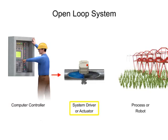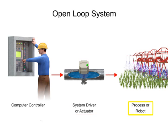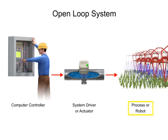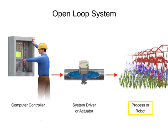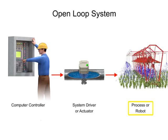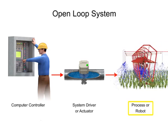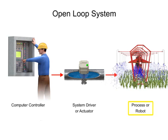When the valve turns on, water flows to the sprinkler and drives a motor that allows the sprinkler to simultaneously move along the field and water the crop.